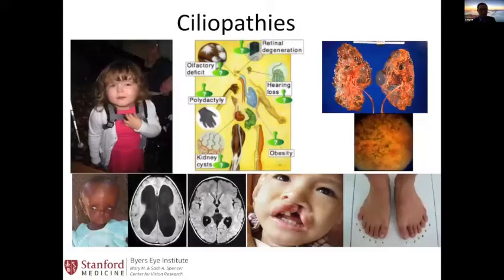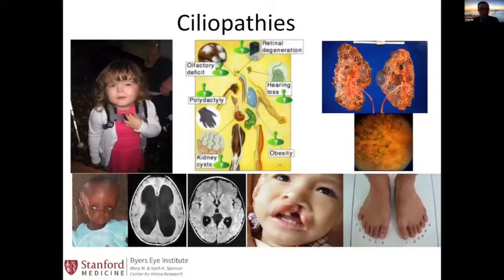The diagnosis for both children is Joubert syndrome, which is a group of diseases called ciliopathies. Defects of the cilia can present with various phenotypes including kidney disease, polydactyly — they can have six fingers and six toes — hearing loss, renal degeneration, obesity, cleft palate, and hydrocephalus.